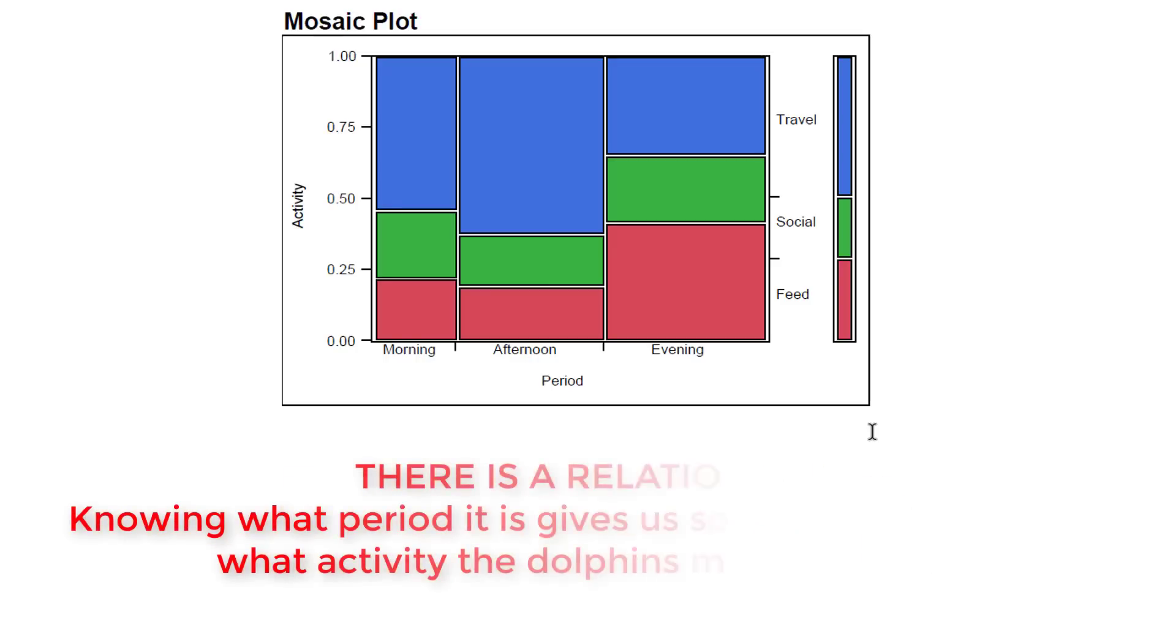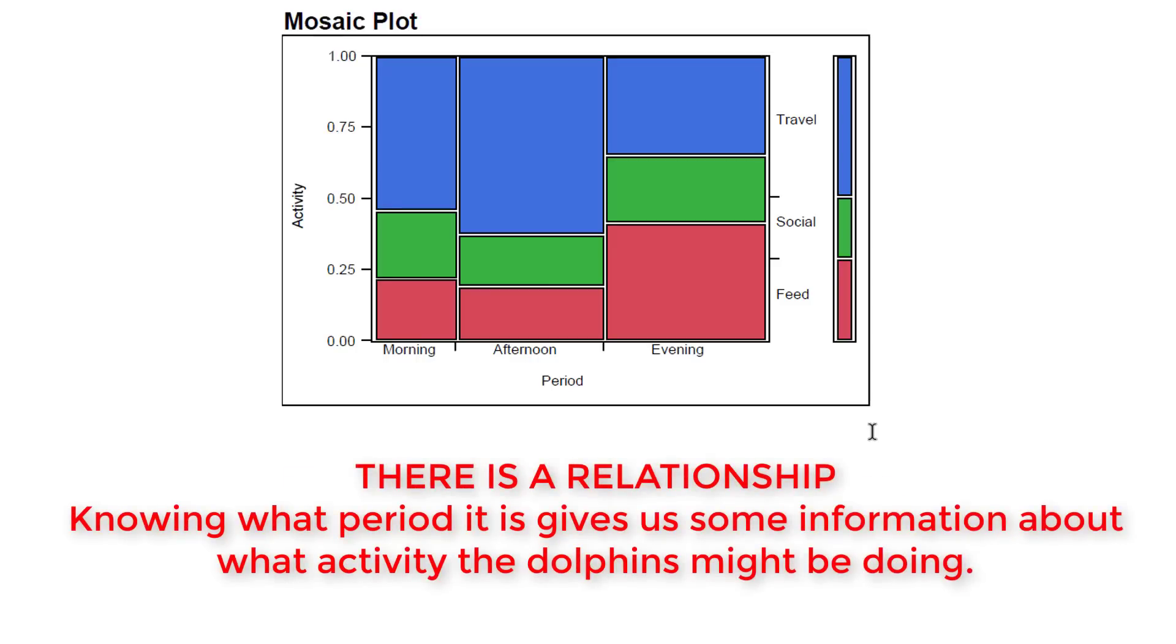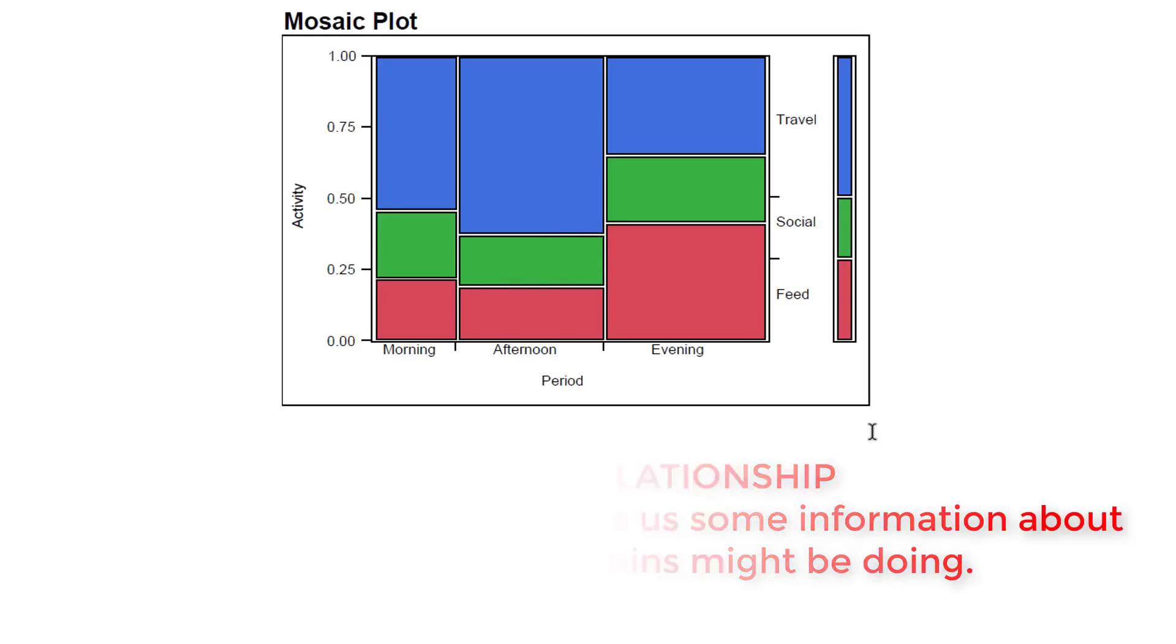With that in mind, knowing X might have you say a different Y, so there's a relationship between X and Y if knowing the X—which is period here—changes your answer for Y. What you can observe visually is the differences between the heights of the bars between each period. When we look from afternoon to evening, we see a sharp difference where feeding increases a lot. So the behaviors or activities between periods are not the same. One of the quickest ways to answer this is that there is a relationship because the heights of the blocks are different—we see different activities over different periods.